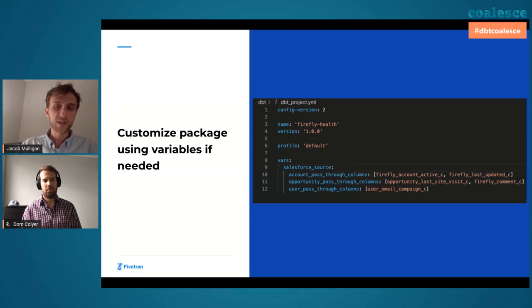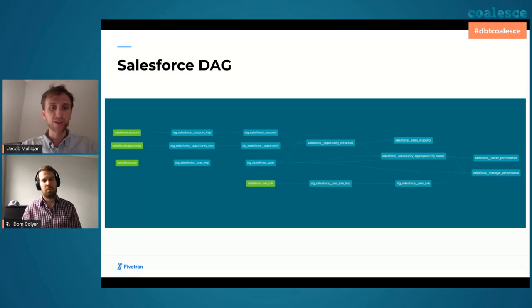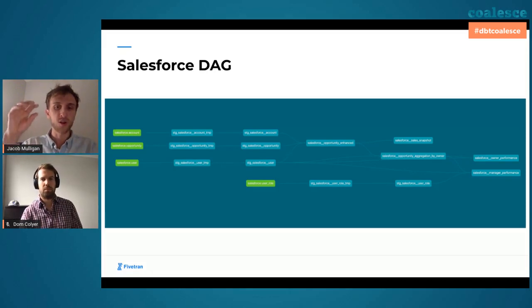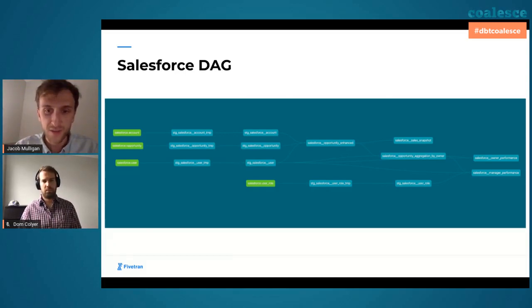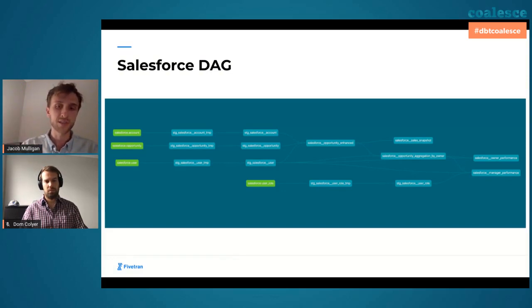Something else that happens when you run dbt run is DBT creates a DAG for you. I'm a visual person and find this really helpful for understanding what's happening under the hood. The light green blocks are the raw tables that Fivetran has loaded into our Snowflake environment. The blue squares show all the different transformations happening at each step of the DAG. On the very far right we have a Salesforce snapshot, a Salesforce opportunity enhanced model — our most used model from this package — and you can see it's pulling together data from the account, opportunity, and user tables. Further upstream is the source package which cleans up the raw data.